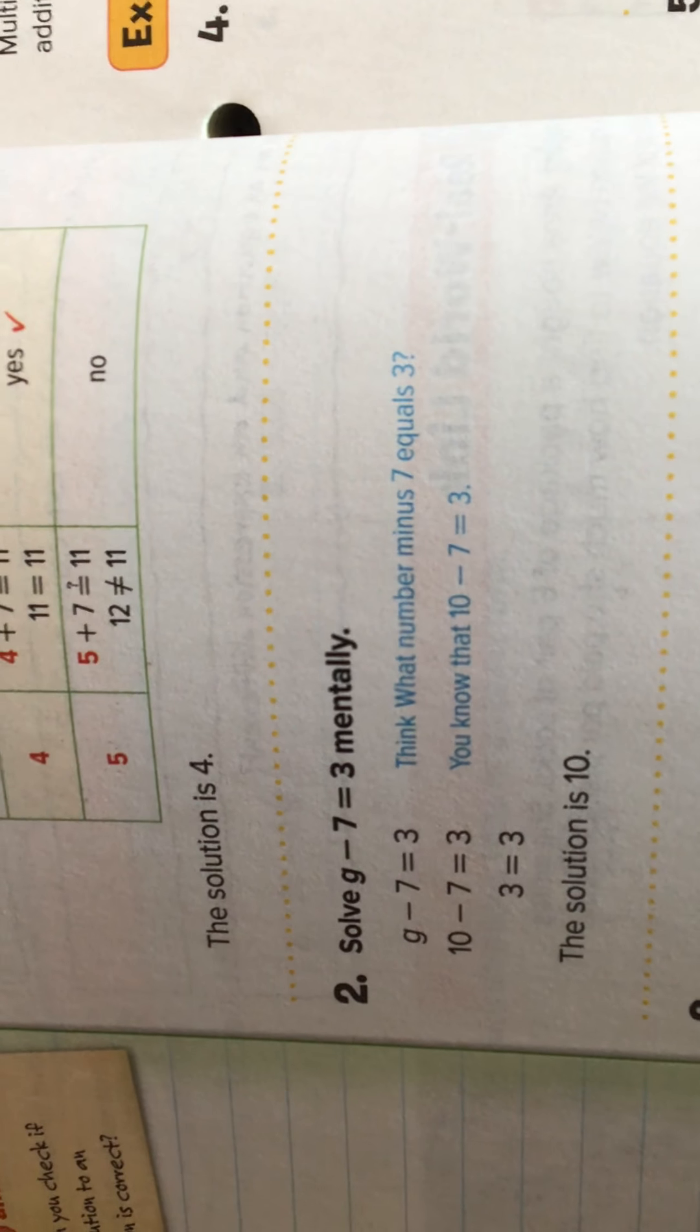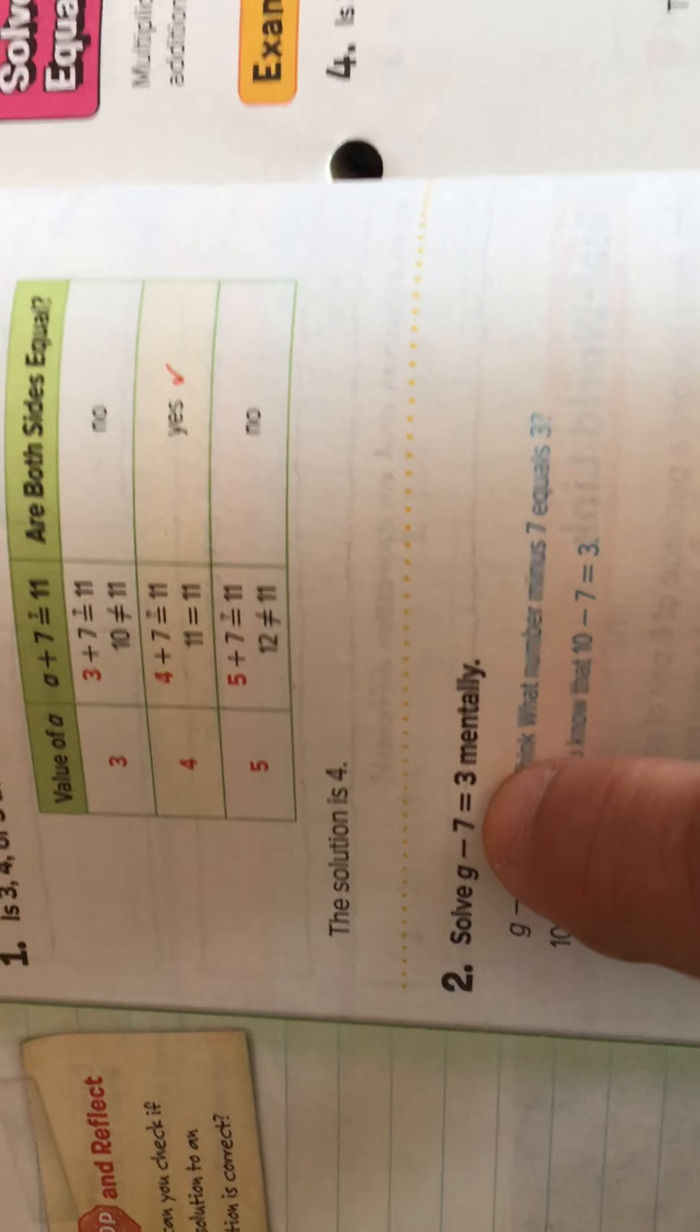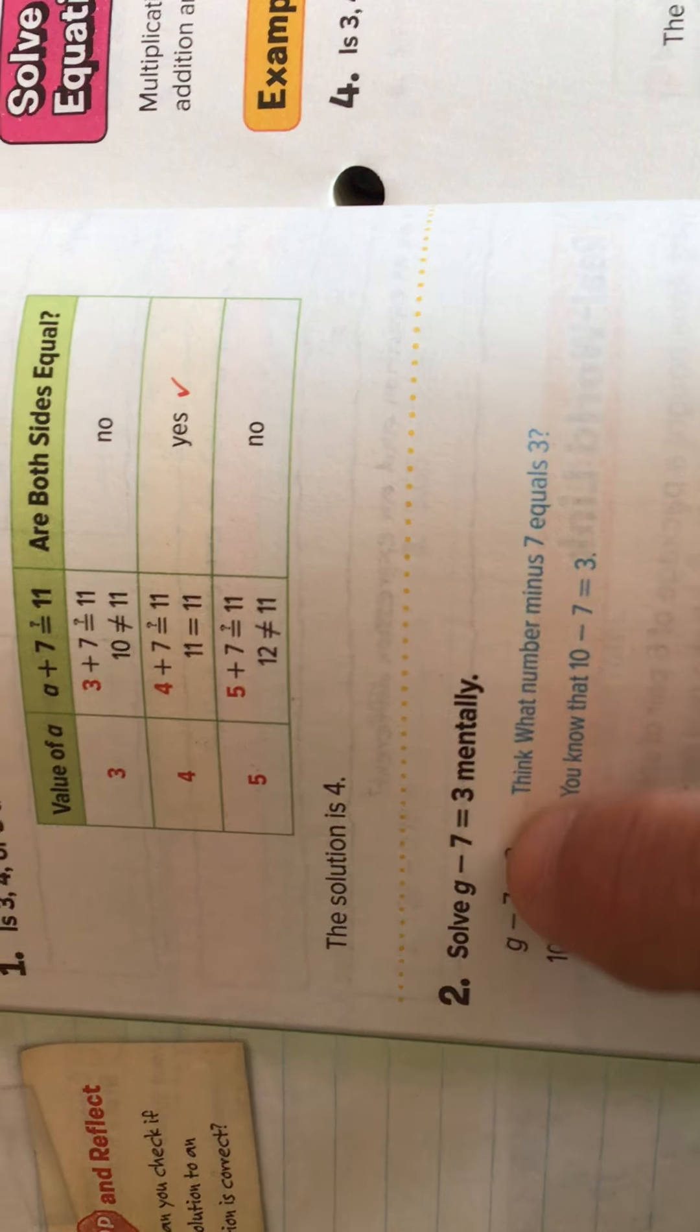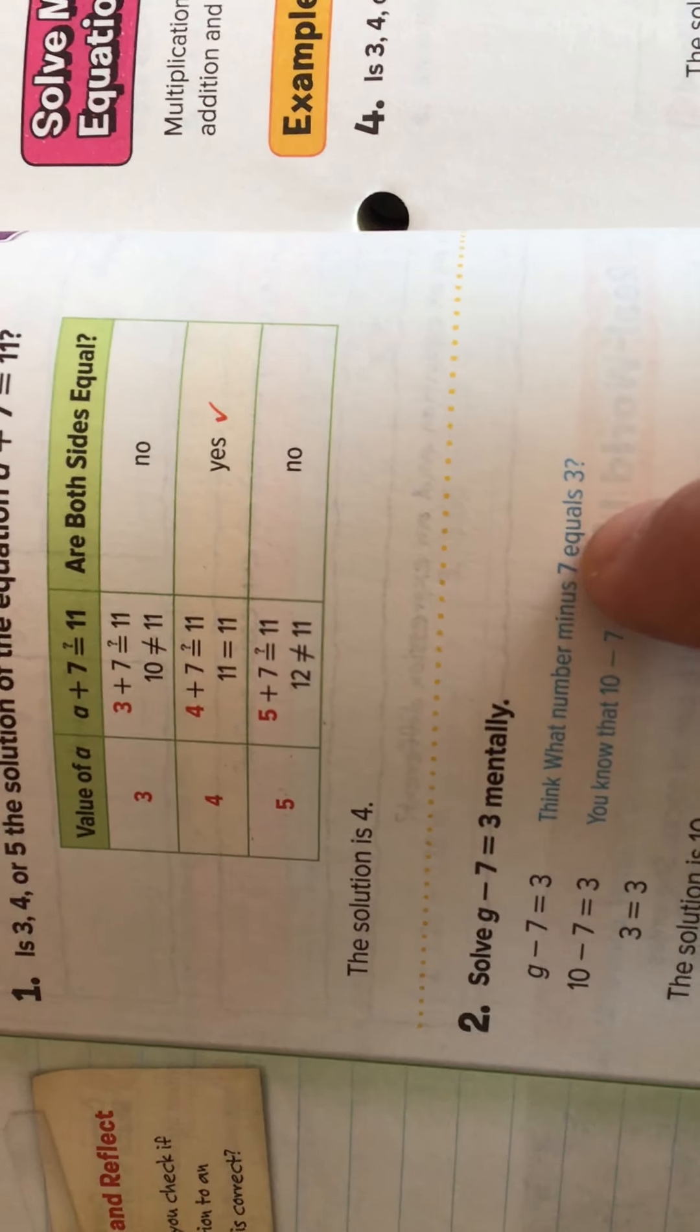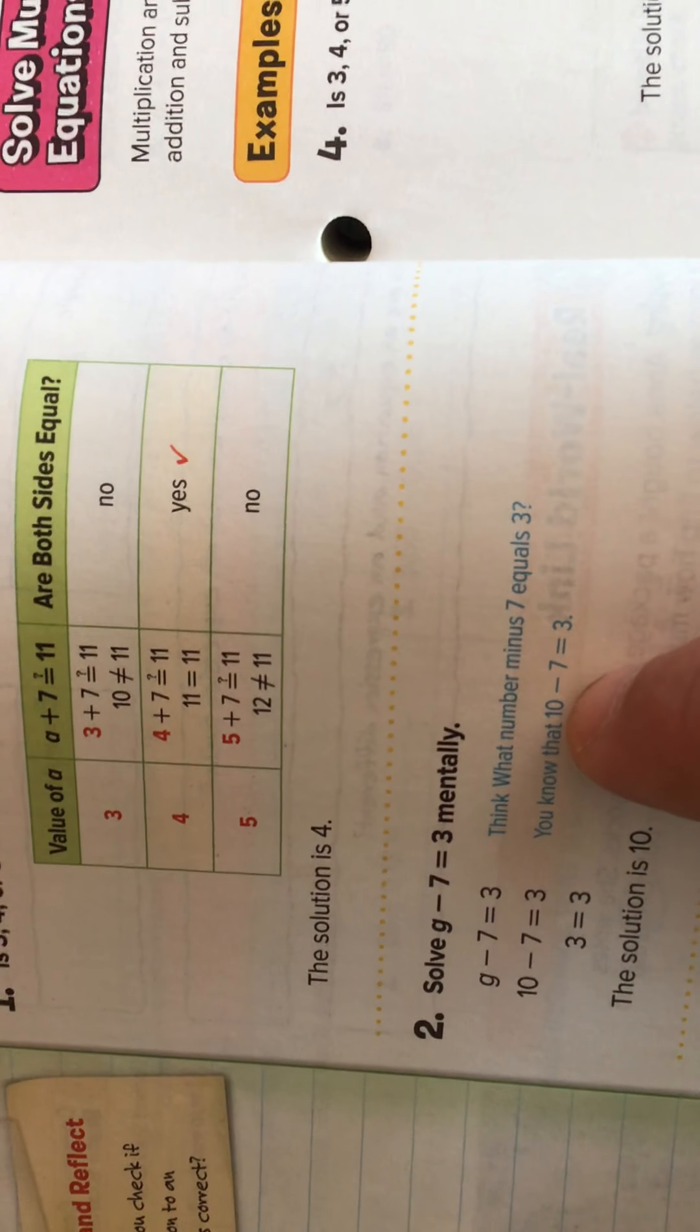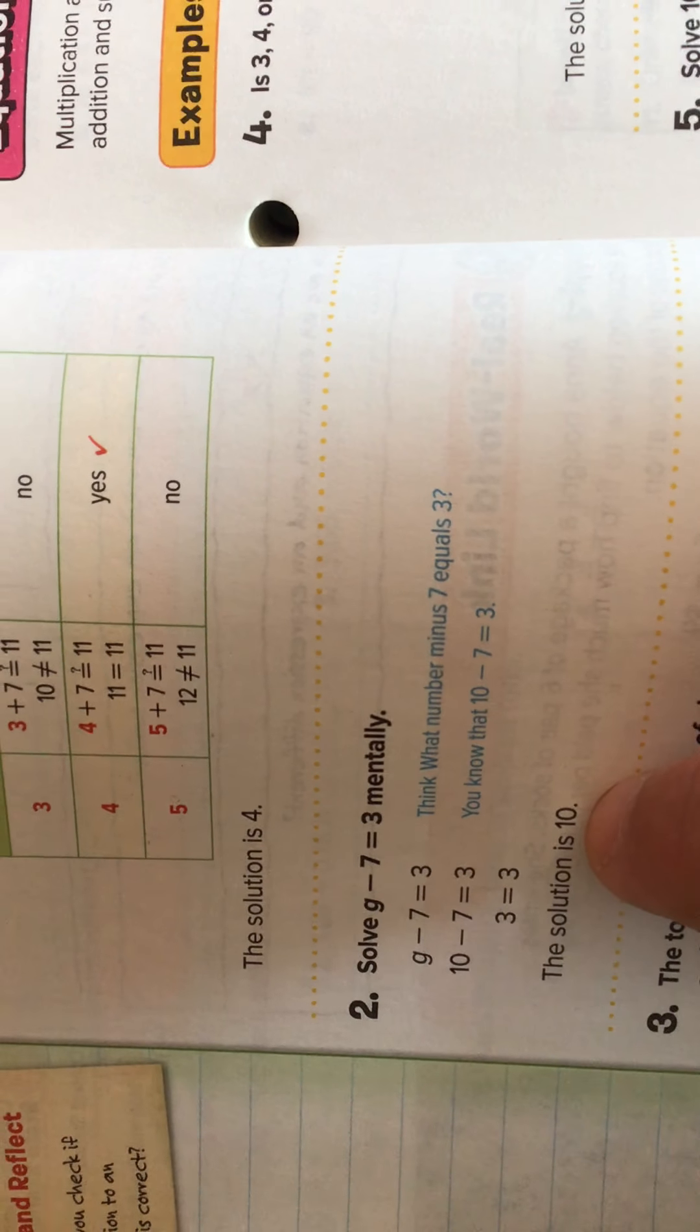Next example. Example 2. Thinking about this problem, g minus 7 equals 3. We know that there's a number that subtracting 7 from will give us the result 3. And that number is 10. So, 10 is g. g equals 10. 10 minus 7 is 3. The solution is 10.